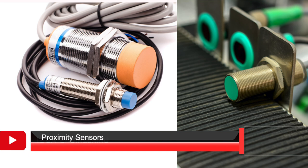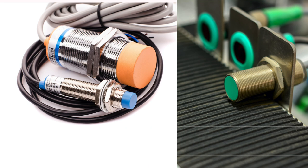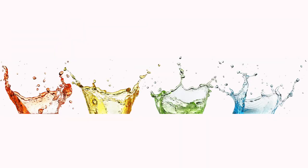The first type of sensors we will be talking about are the proximity sensors. These sensors are capable of detecting objects such as metal, glass, plastic, and most liquids.